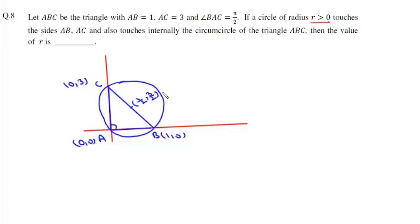This length BC is √10, which is the diameter of the circle. So radius of the circle will be √10/2. Now we need to find the radius of a circle which touches these two sides and also this circle.